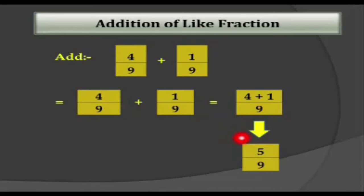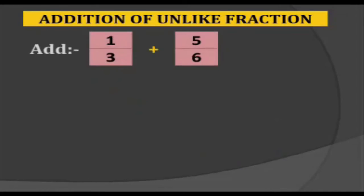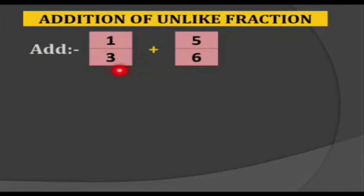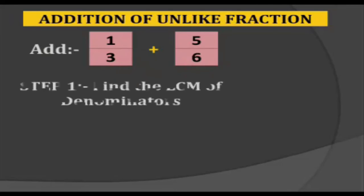Now, addition of unlike fractions. Here we can see 1 by 3 plus 5 by 6. These are unlike fractions because the denominators are different. In that condition, first we need to find out the LCM of the denominators, which are 3 and 6.